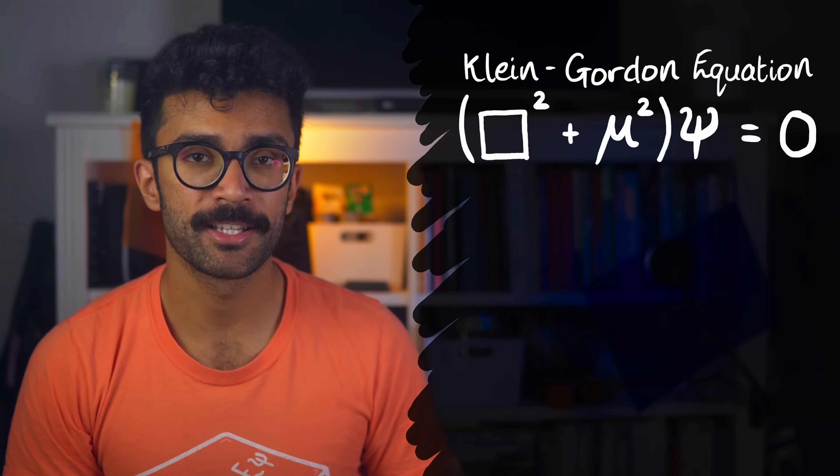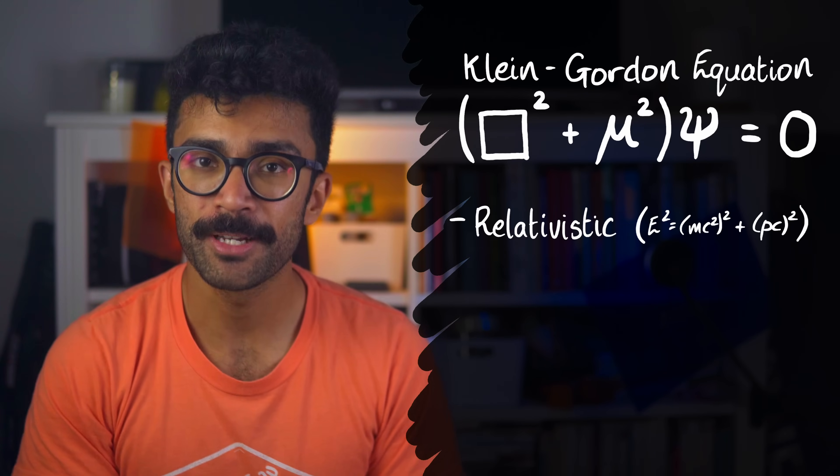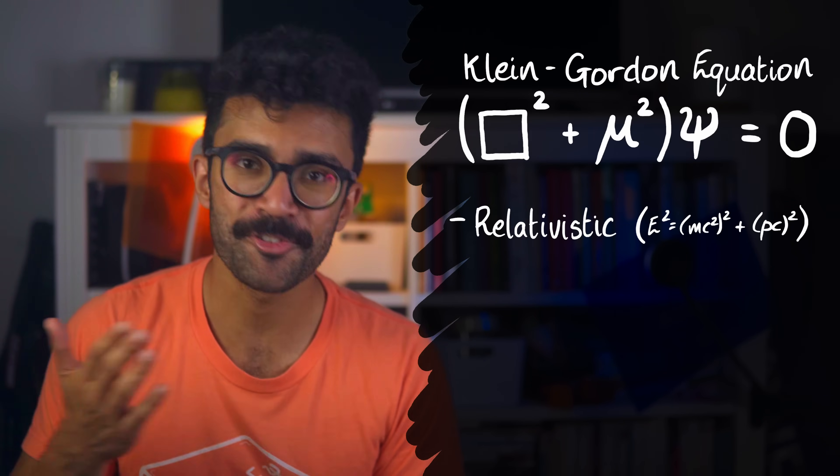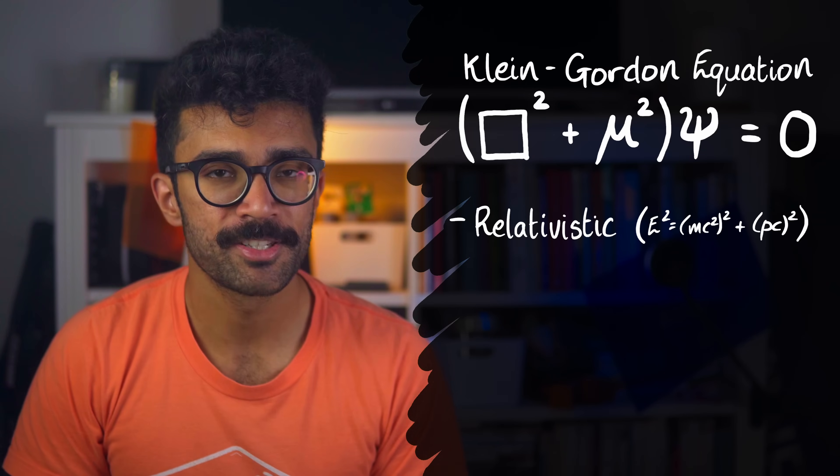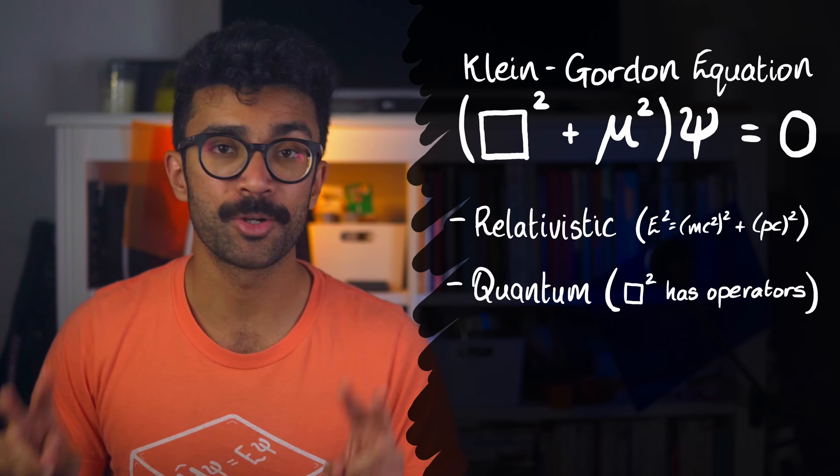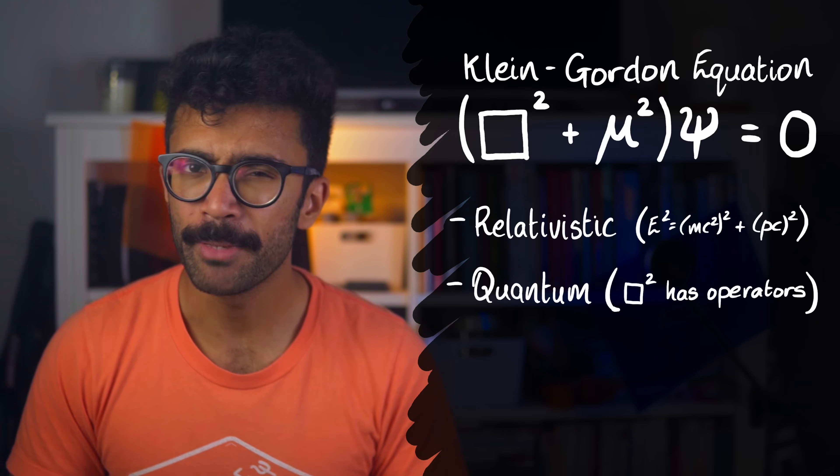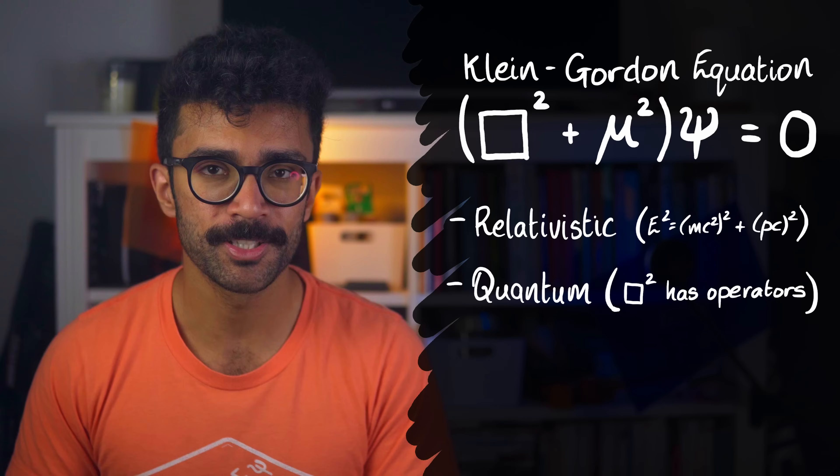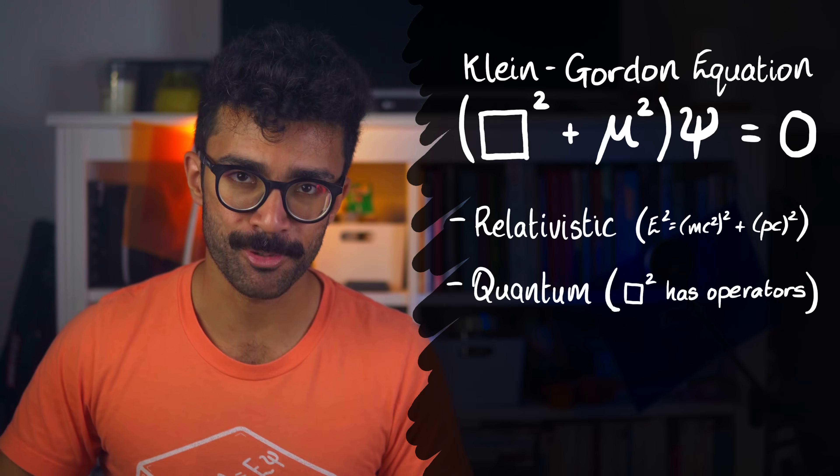Here are the important things to know about it. Firstly, as we've seen by starting with Einstein's famous equation, this equation incorporates into it the theory of special relativity, unlike the Schrodinger equation. The Klein-Gordon equation is also quantum, in the sense that it deals with measurement operators and quantized measurement results, meaning that for a given system, only some measurement results are possible, as opposed to a whole infinite spectrum of them.